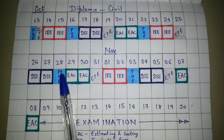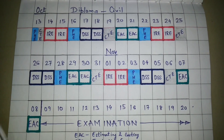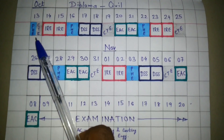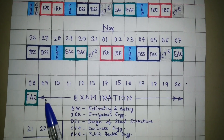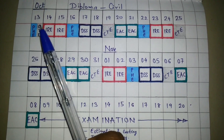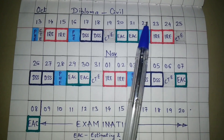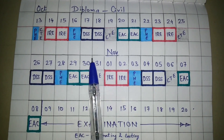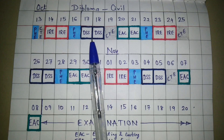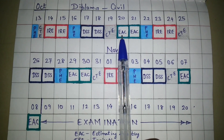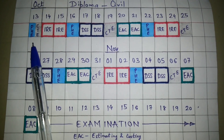Four and a half days each for CTE and PHE. Starting from tomorrow up to the 8th — because examinations are starting from the 9th to the 23rd — you have a timetable from the 13th to the 8th. This gives you six days for IRE, six days for DSS, six days for EAC, and four and a half days each for PHE and CTE.